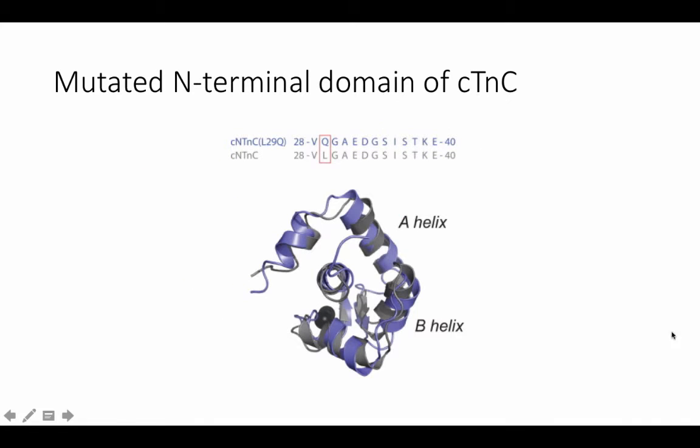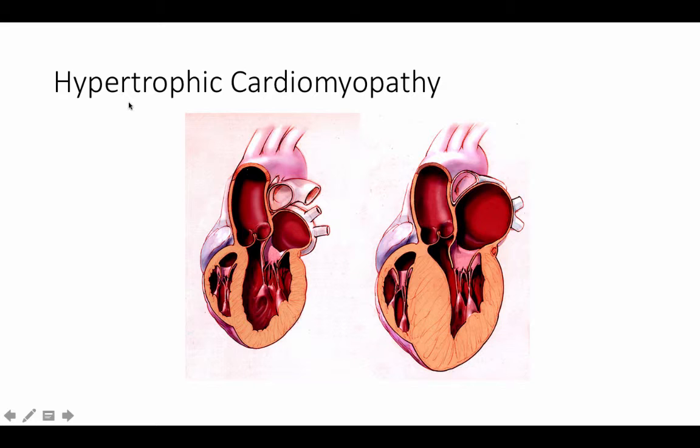So what happens when mutated forms of cardiac troponin C are produced instead? Although mutations in cardiac myosin and cardiac troponin I and T more heavily contribute to hypertrophic cardiomyopathy, seven mutations associated with HCM in cardiac troponin C have been found. Hypertrophic cardiomyopathy is a rare condition in which heart muscle cells become enlarged, thickening the walls of the ventricles. This makes it harder for blood to leave the heart, which forces it to work harder in order to pump blood.